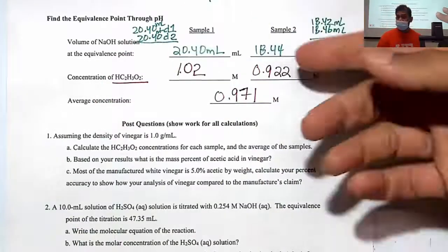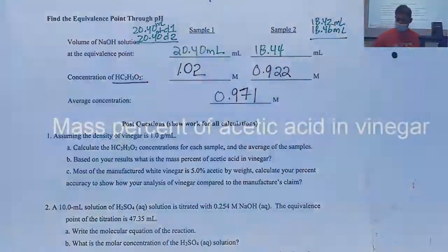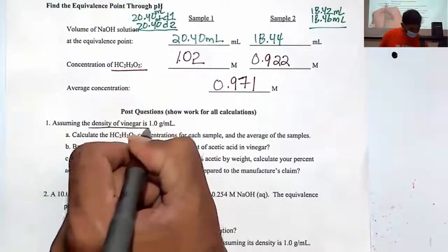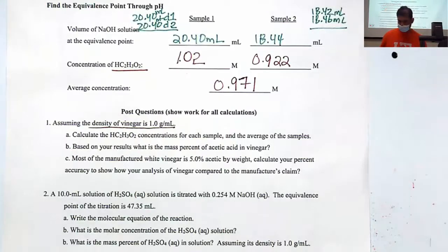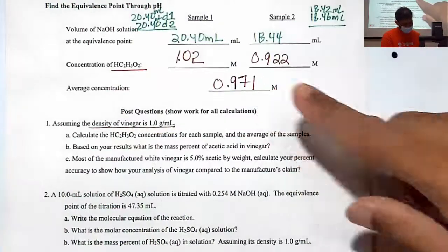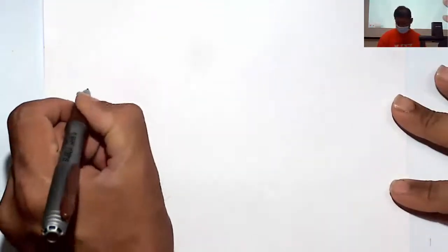Now let's calculate the mass percentage of acetic acid in vinegar. The density of vinegar is assumed to be 1 gram per milliliter. Mass percentage is part over whole — it's the mass of acetic acid over the mass of the vinegar, multiplied by 100.